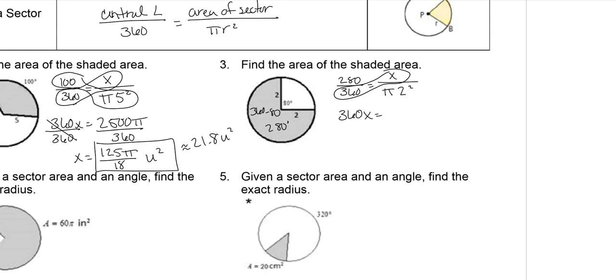So πr is 2 squared. 360x is equal to 280 times 2 squared, which is 1120π. Divide both sides by 360. That gives us 28π/9 units squared. And to find the rounded one, you multiply that times π, which is about 9.8. But this is the exact answer.